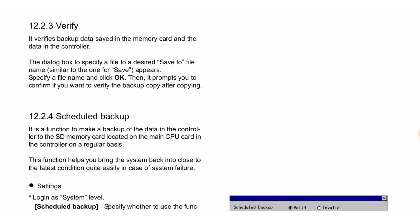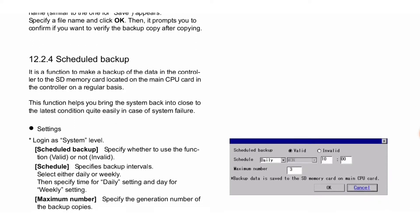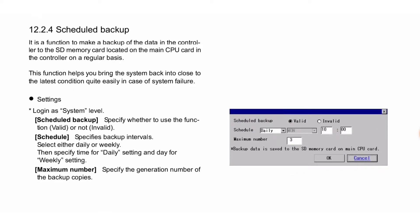Next is Scheduled Backup. It is a function to make a backup of the data in the controller to the SD memory card located on the main CPU card in the controller on a regular basis. This function helps you bring the system back to close to the latest condition quite easily in case of system failure.